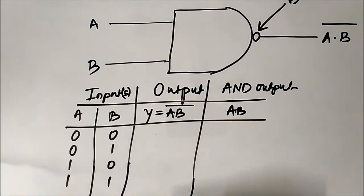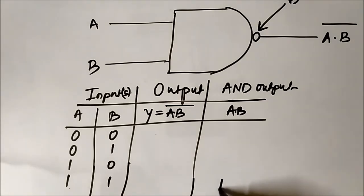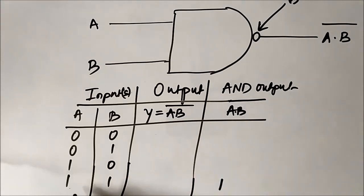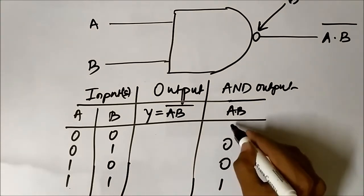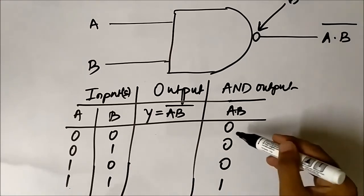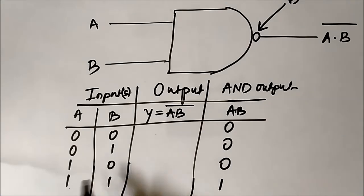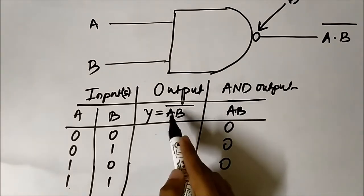As there are two inputs A and B, there are four input combinations: 0 0, 0 1, 1 0, and 1 1. We know that in the AND gate the output is logic 1 only when both inputs are high. So the AND output is high only in the last case (1 1); for all other cases the AND output is 0.